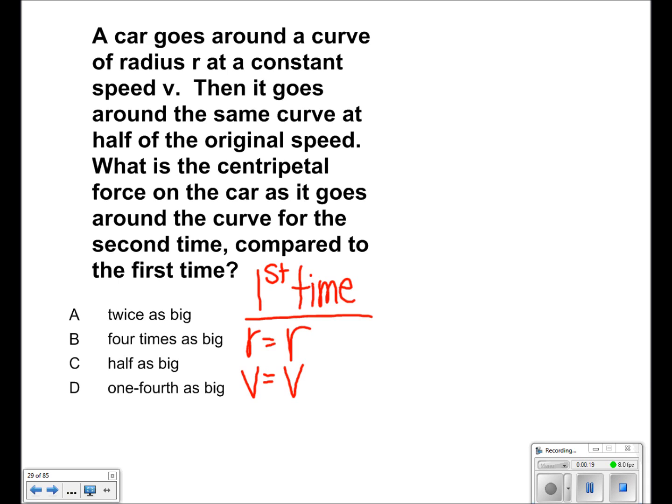We use the equation acceleration equals velocity squared over r. Putting in our numbers, we get that acceleration equals v squared over r.